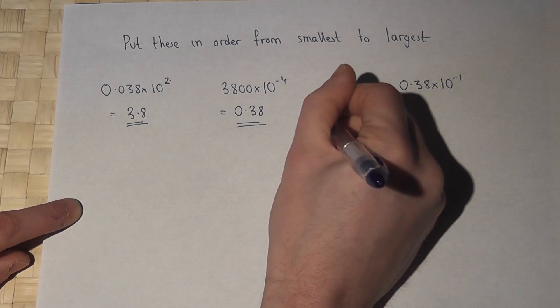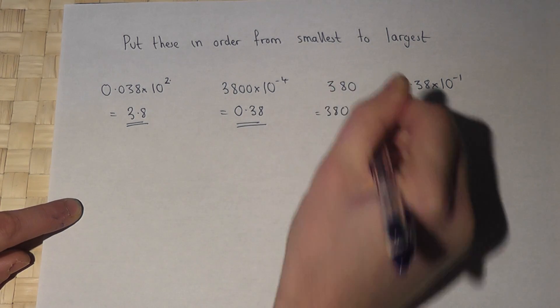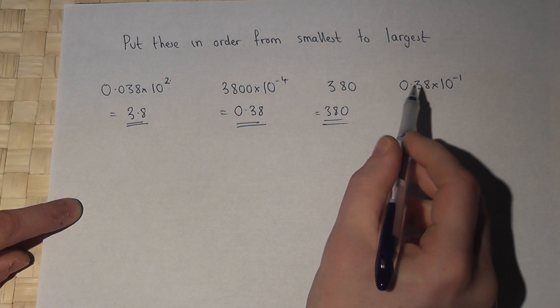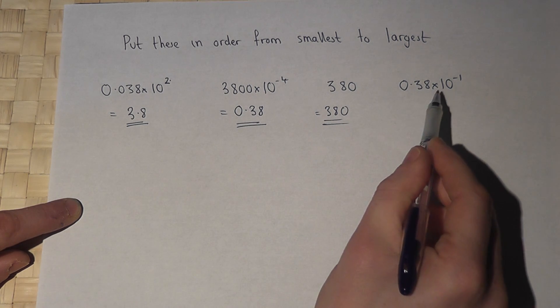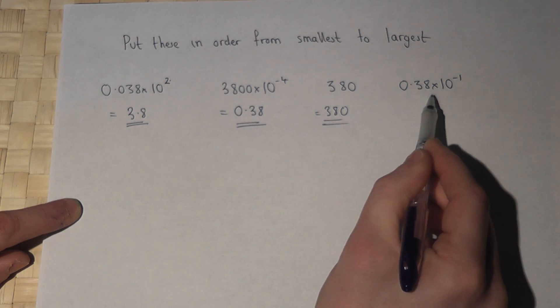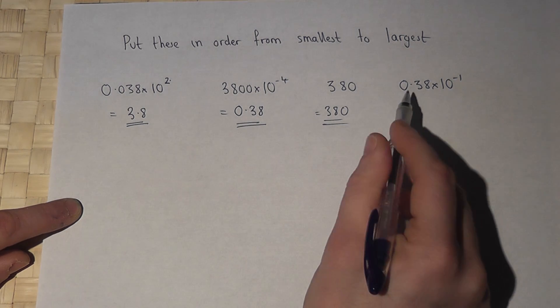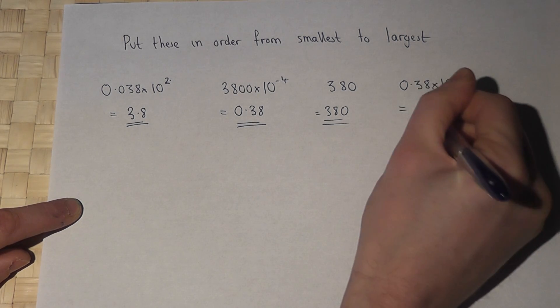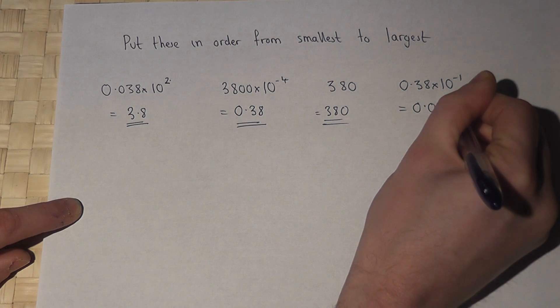Now 380 is just 380. And then 0.38 times 10 to the power of minus 1 means divide by 10 once. So 0.38 goes to 0.038.